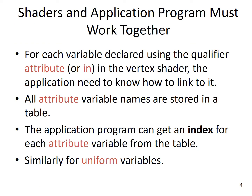Shaders and the application program must work together. Remember that attribute or in variables declared in the vertex shader are read-only. Their values must be defined in the application program. When the application program has all the data for the attribute variable defined, it needs to know how to link to the attribute variable. How this works in OpenGL is that all the attribute variables in the vertex shaders are stored in a table. The application program can look up this table for the name of the variable to get an index value. All data linkings are done via this index value. For uniform variables, it works the same.